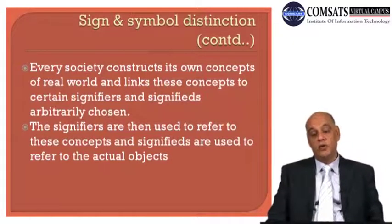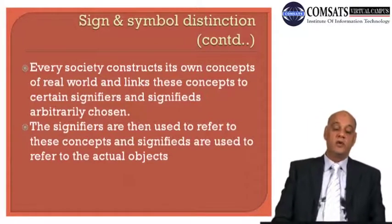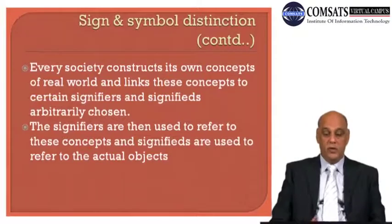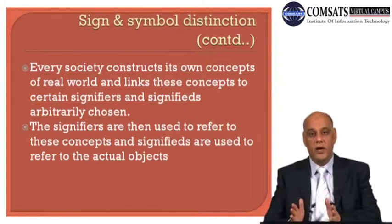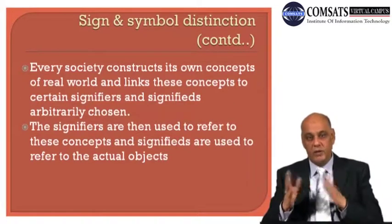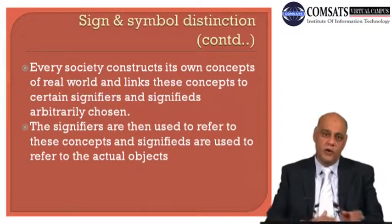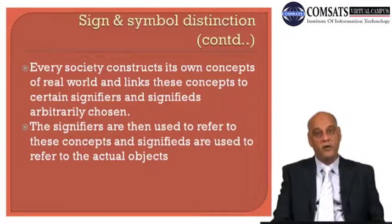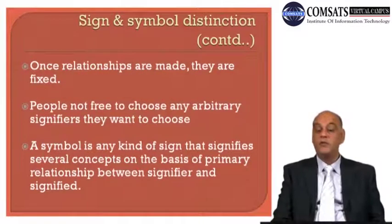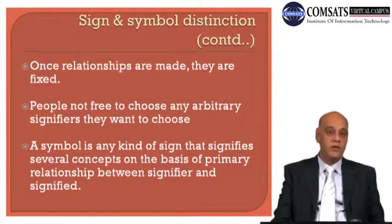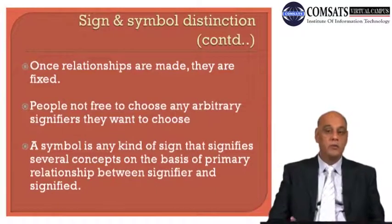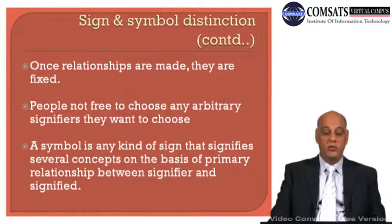The signifiers are then used to refer to these concepts, and the signifiers are used to refer to the actual objects. Signifiers are linked to the concepts, the ideas, the pictures in the minds, and then used to refer to actual objects. Once relationships are made, they are fixed and don't change over a long period of time. Even now, we have the same words which came earlier, only with a little modification.